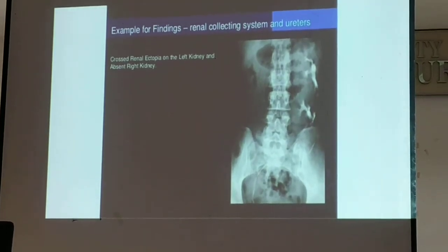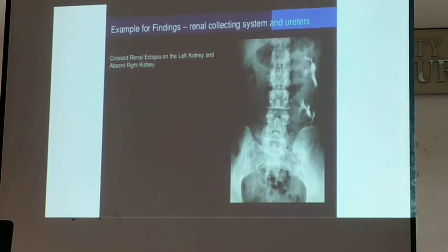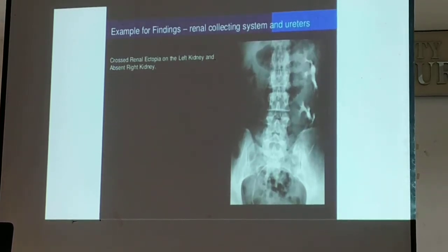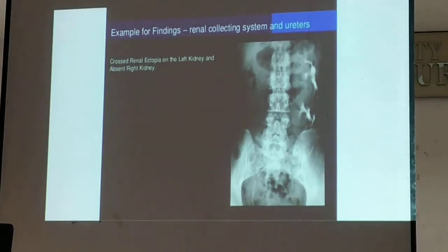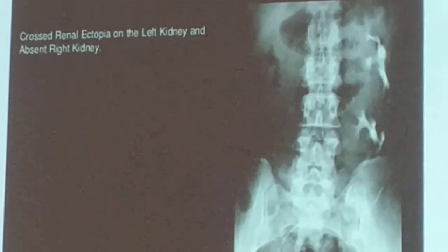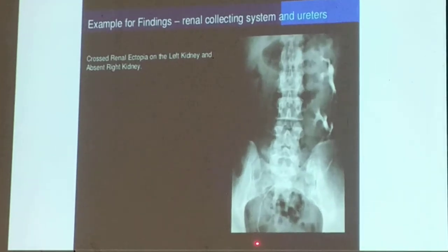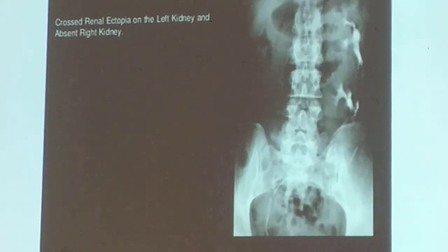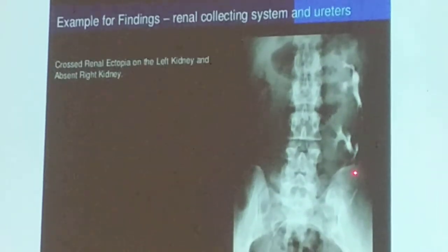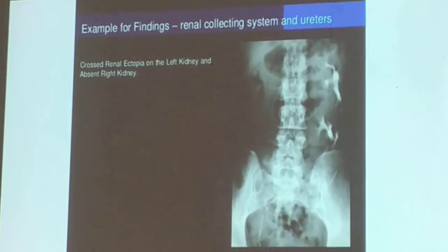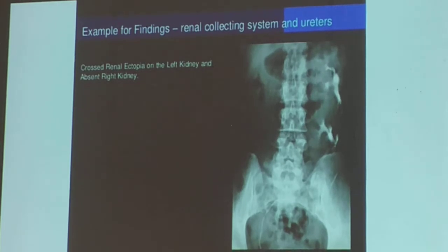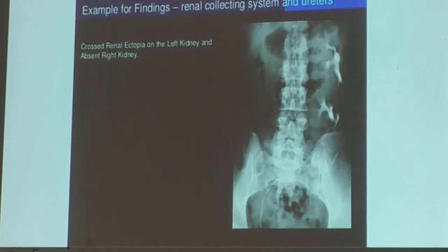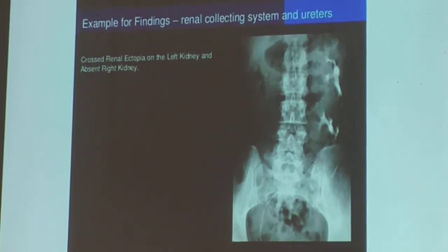Where is your right kidney here? Absent right kidney. But as you notice, if you try to see this, the ureter will go to the right side of your bladder. So the right kidney did cross to the center — this is what we call cross ectopia of your right kidney. The right kidney went to the left side, and it's very possible for the left kidney to go to the right side as well. This is cross renal ectopia.